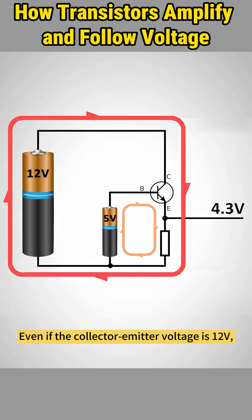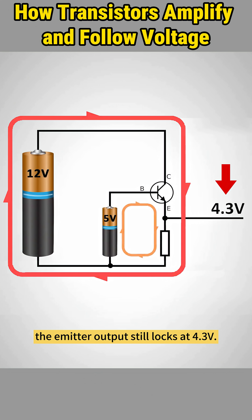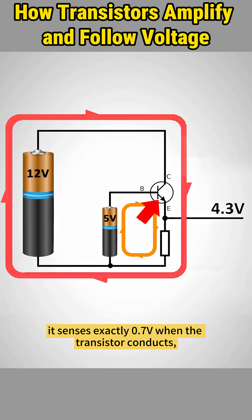Even if the collector-emitter voltage is 12 volts, the emitter output still locks at 4.3 volts. This resistor here is called a negative feedback resistor. It senses exactly 0.7 volts when the transistor conducts, stabilizing the circuit and improving performance.